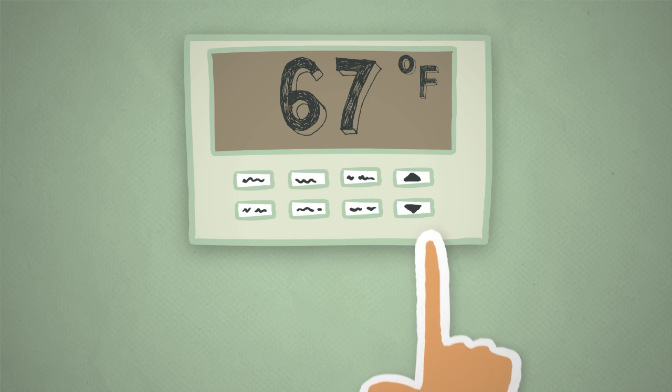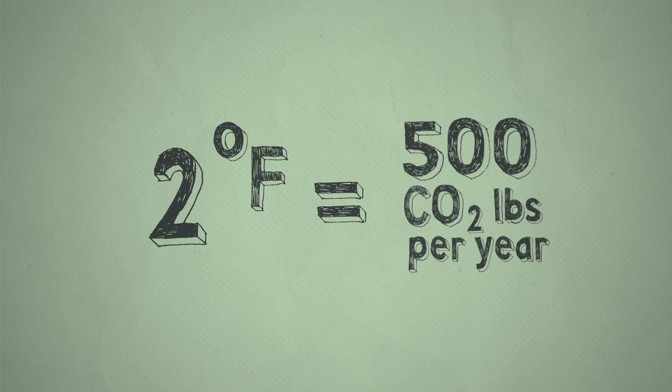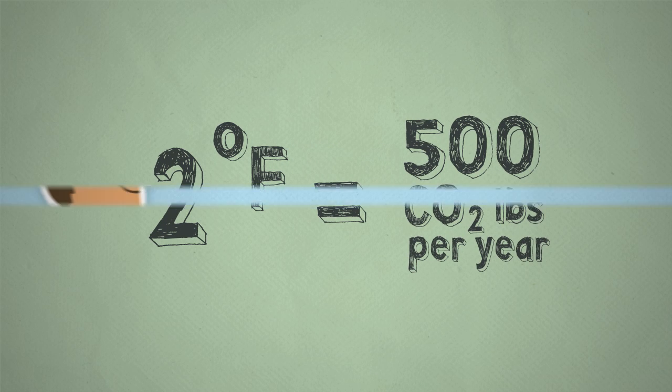You can also turn your thermostat down just a touch in winter and a little higher in the summer. Every two-degree change saves another 500 pounds of carbon dioxide.